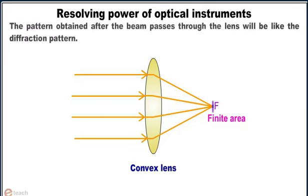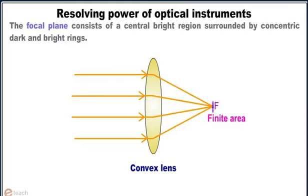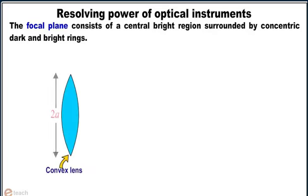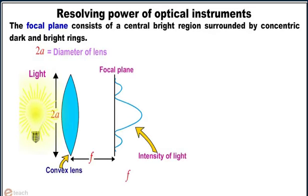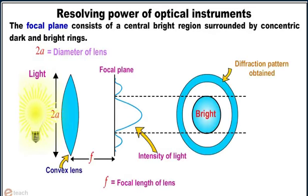The pattern obtained after the beam passes through the lens will be like the diffraction pattern. The focal plane consists of a central bright region surrounded by concentric dark and bright fringes, where 2a is the diameter of the lens, f is the focal length of the lens, and r0 is the radius of central bright fringe.